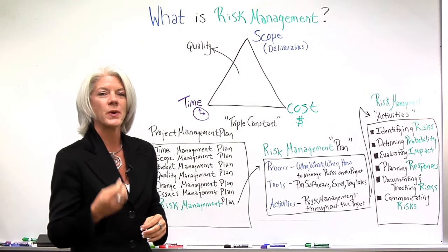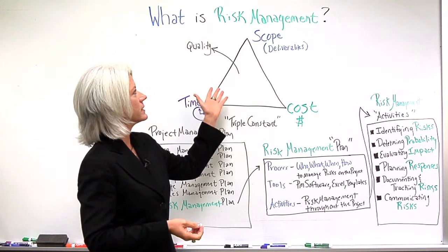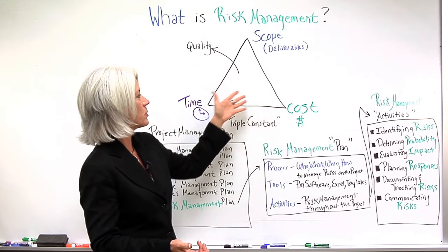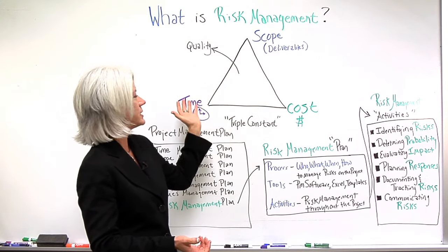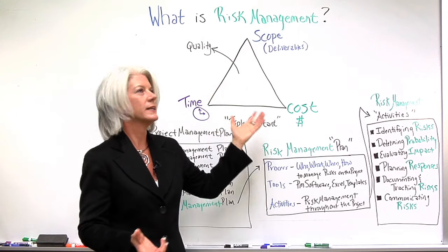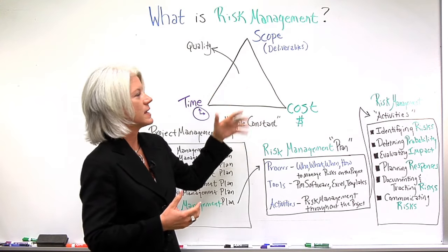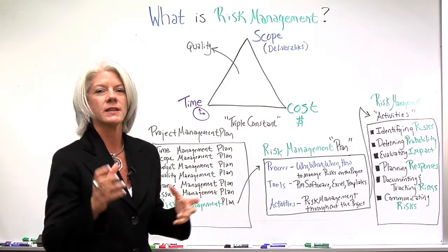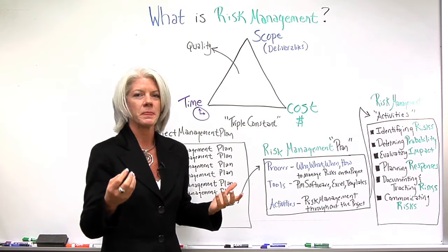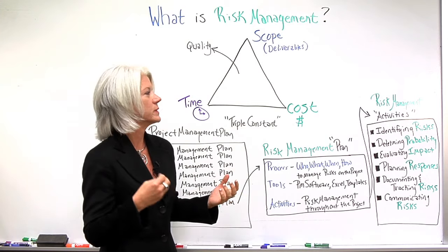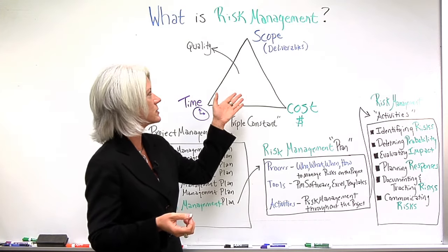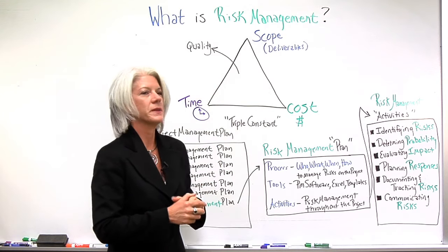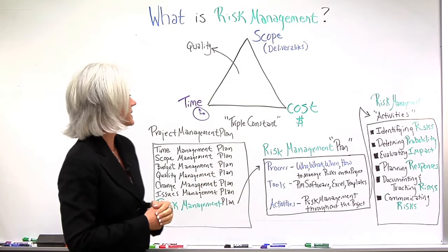Throughout the project, different events occur — maybe things happening with scope or cost, or changes in the schedule or quality — that could introduce risk, or vice versa. Different events can occur throughout the project that also can impact these components as well.